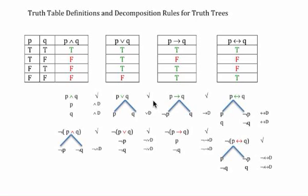What I'd like to do here is give a quick walkthrough of the relationship between the truth table definitions for our logical operators and the decomposition rules for their use in generating truth trees. At the top are the truth table definitions for our operators, and below are the truth tree decomposition rules for the unnegated and negated versions. I'll talk through how each rule relates to the truth conditions for statements of those forms.